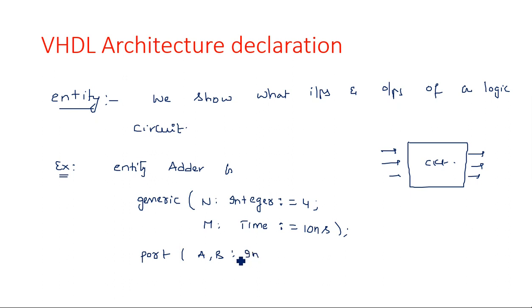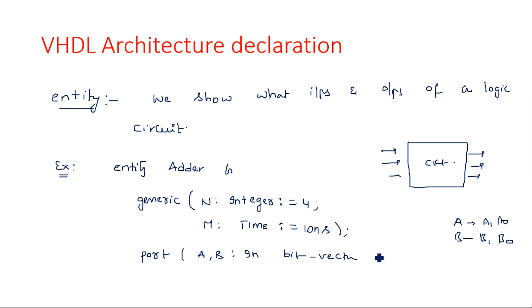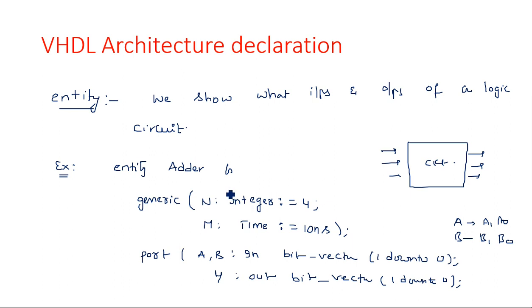A process may be delayed or repeated for 10 nanoseconds. Then we specify port, consisting of input ports and output ports. Let A, B be inputs — we specify input mode and type, either 'bit' or 'bit_vector' depending on size. If A and B are two bits each, we write 'bit_vector(1 downto 0)'. For output Y, if it's a single bit then 'bit', otherwise 'bit_vector'. After two-bit addition giving three bits, we use '2 downto 0', then 'end port; end entity some_adder'.